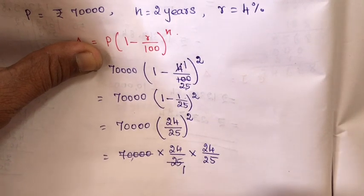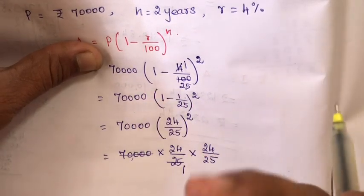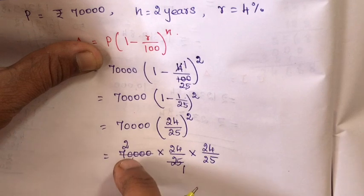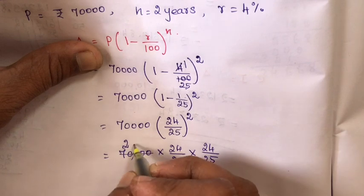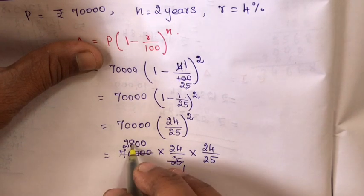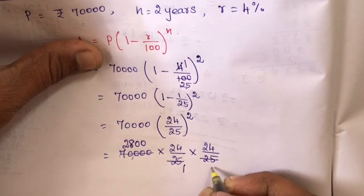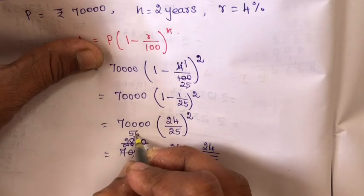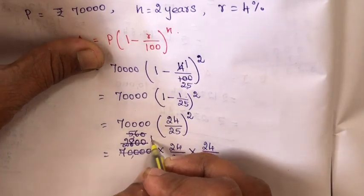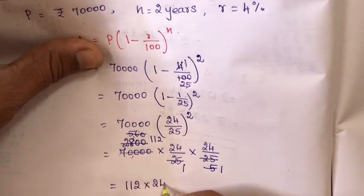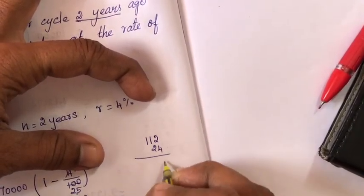Now simplifying: 70,000 divided by 25 gives 2,800. Wait — 70,000 into 24 by 25 whole squared. Here 5 into 25, cancel. Then 4 by 25. Now multiply: 112 into 24 into 24. First, 112 into 24: 2 fours are 8, 1 four is 4, 4 one is 4.